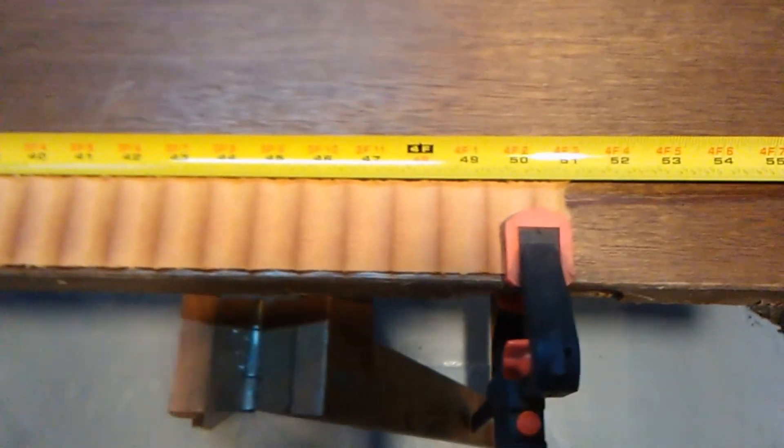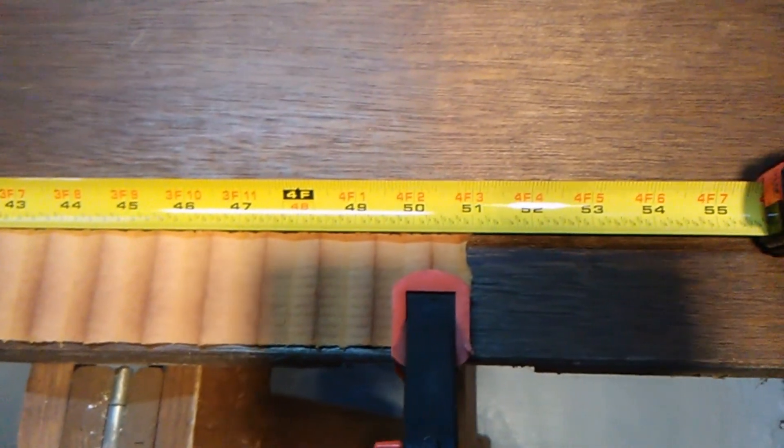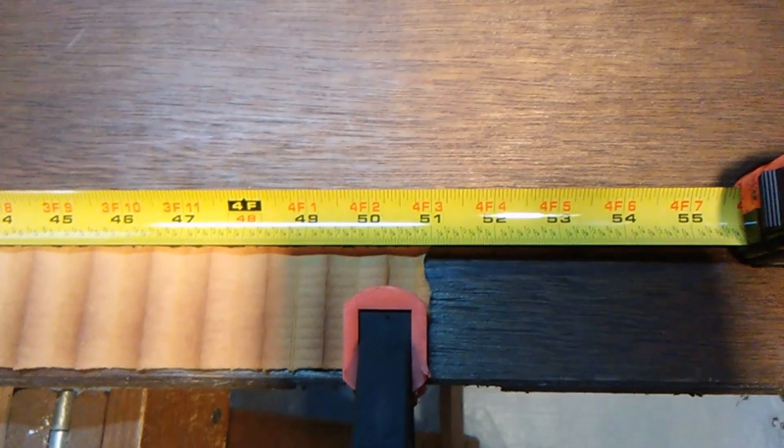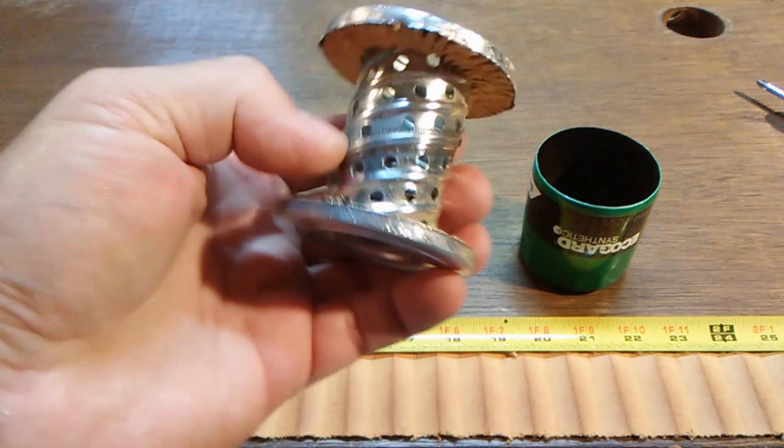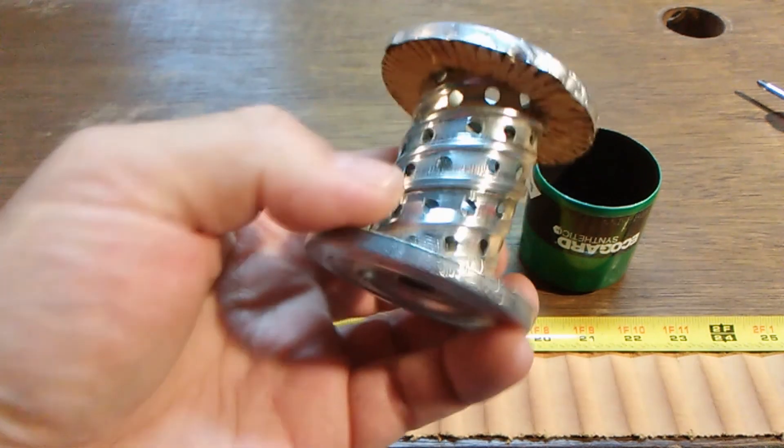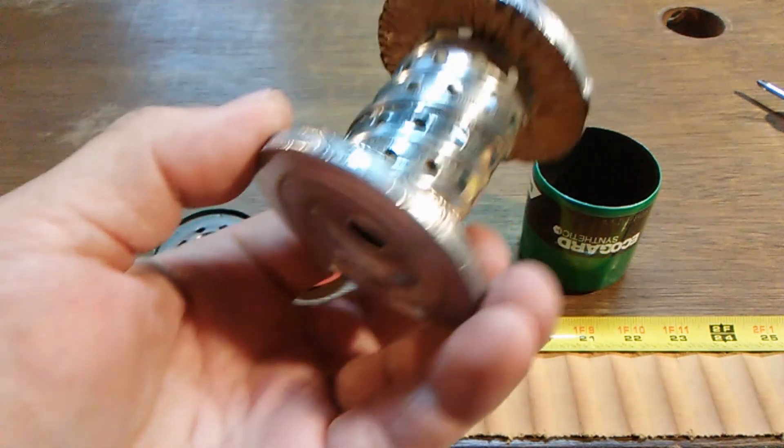This is how long she is. She's about 51 inches long. See that. And here's your metal inner core. Nice and solid. Nice big holes.